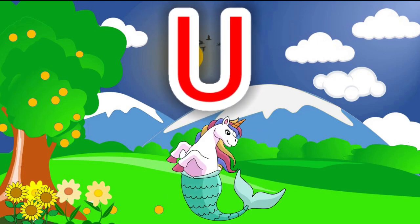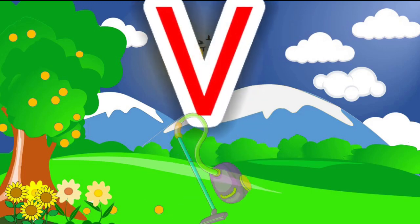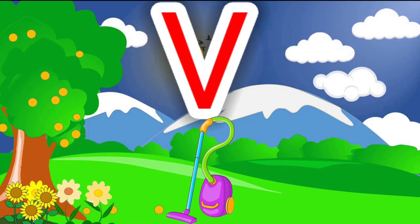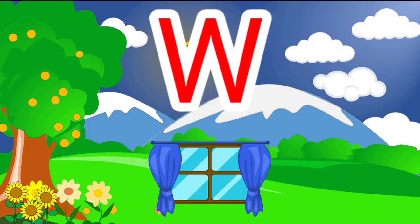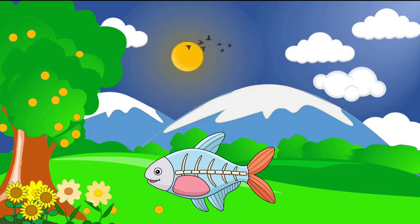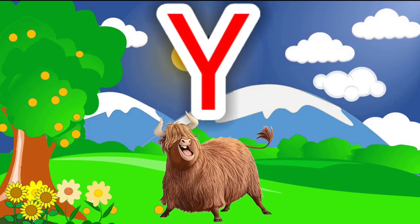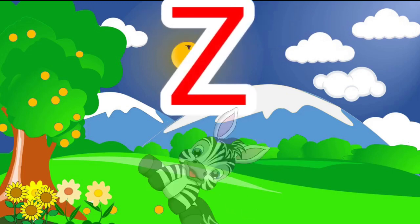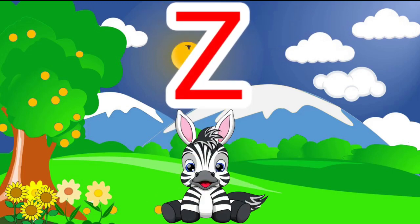U is for Unicorn. V is for Vacuum. W is for Window. Bye!